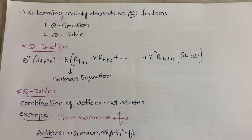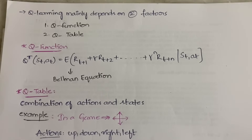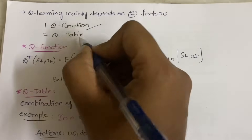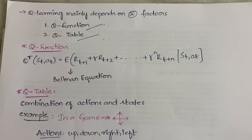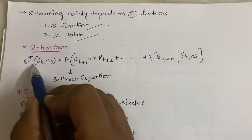Those were the three terms — policy, reward, and penalty — that you need to understand before learning Q-learning. Now, Q-learning mainly depends on two factors: the Q-function and the Q-table. Let's understand what the Q-function is first.